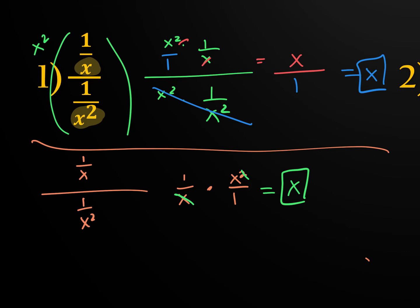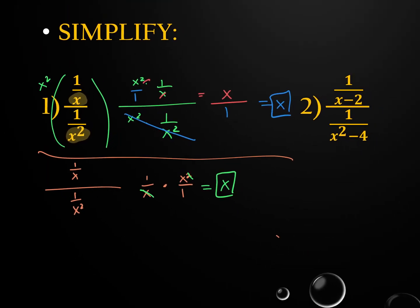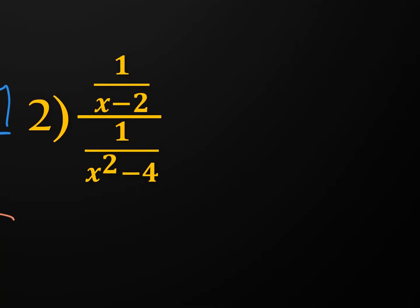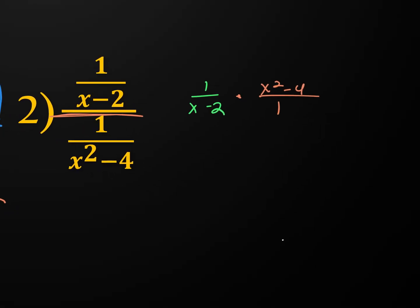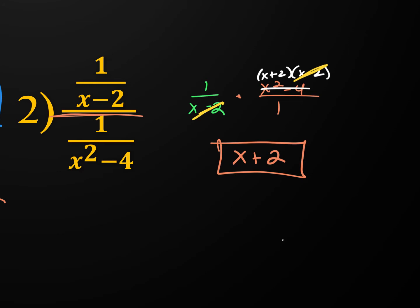For example two, I would do keep-change-flip: keep the top, change division to multiplication, flip the second one. We see a difference of two squares, so factor x squared minus 4 into (x+2)(x-2). The (x-2)'s cancel. In the top I get 1 times (x+2), which is just x+2. In the bottom it's 1 times 1, so it's just x+2. Any questions on that one?